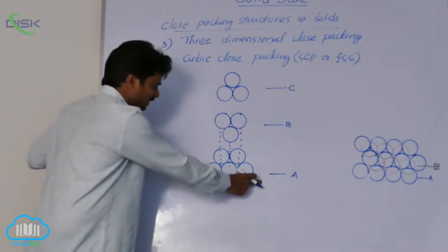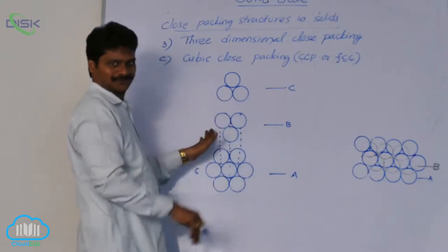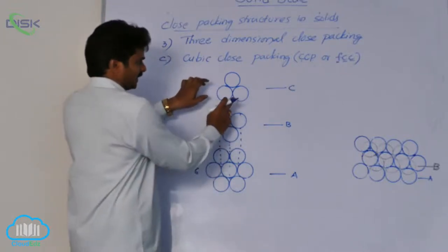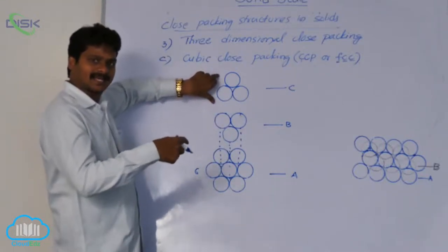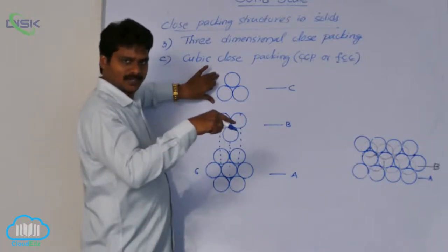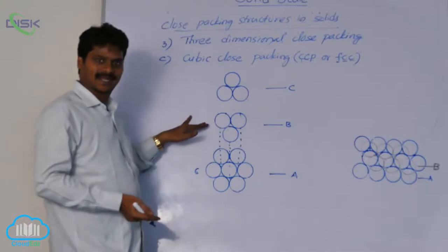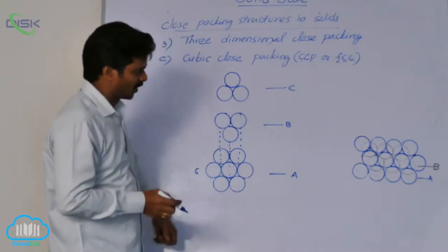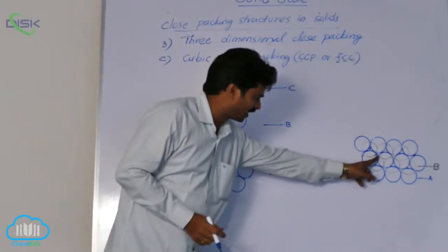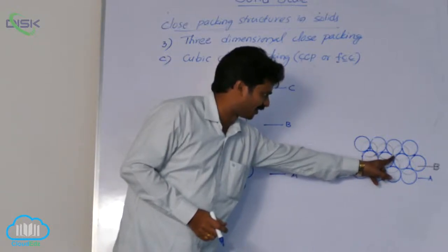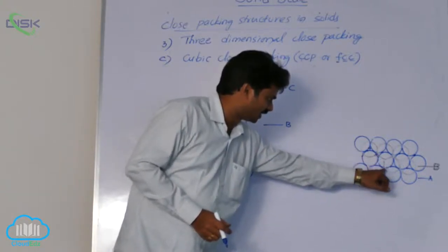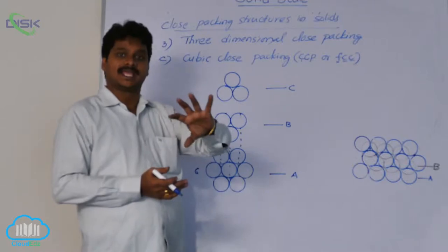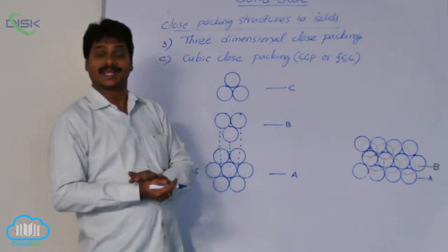Here, this is the first layer and this is the second layer. These two are the same in HCP also, but where do CCP and HCP differ in the third layer? If the layers are placed over the second layer such that the spheres of the third layer occupy the octahedral voids — here is an octahedral void, and here again is an octahedral void — in the same way there will also be octahedral voids here. So if the third layer is placed into those octahedral voids, it gives a different arrangement.